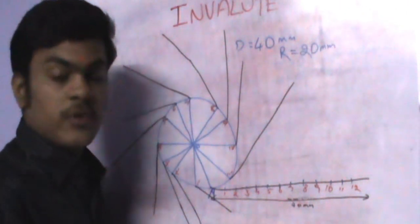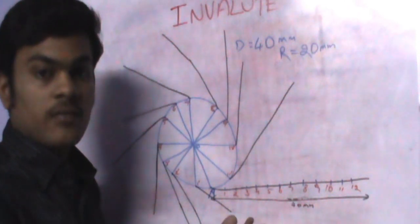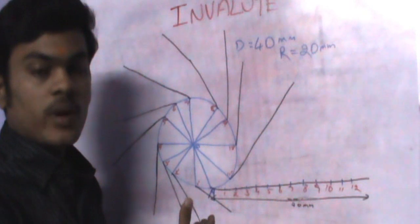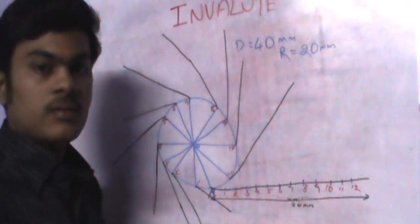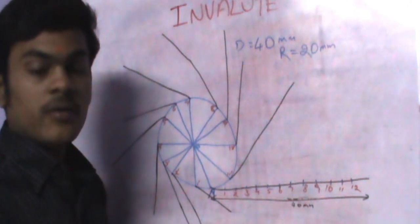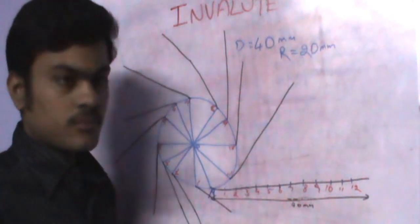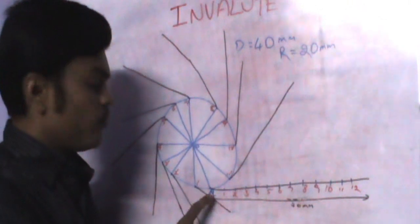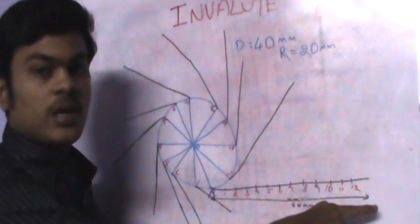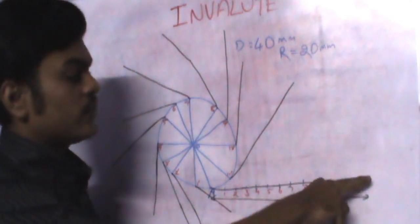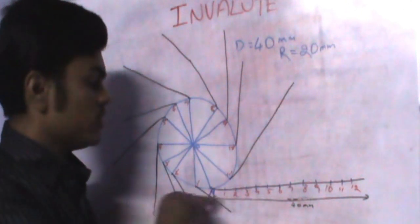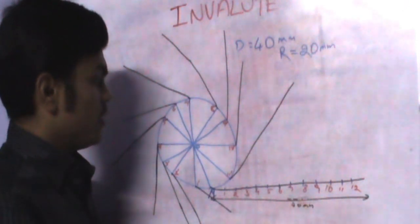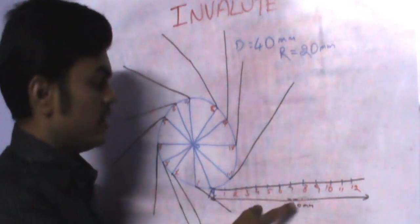Let me repeat. First, draw the circle of the given radius, then divide the circle into a number of equal parts — here 12 equal parts, though you may use 9 or 8. Give a name to each division point on the circle. Then take any point A on the circle as a starting point, draw a tangent from A of length equal to the diameter, 40 mm, and divide that tangent into the same number of equal parts.